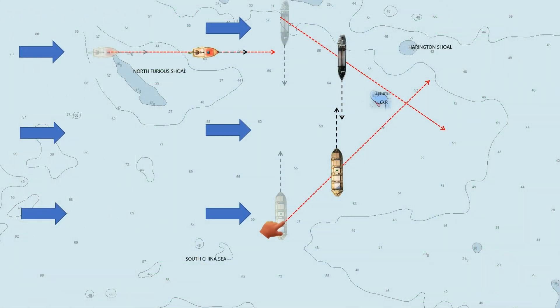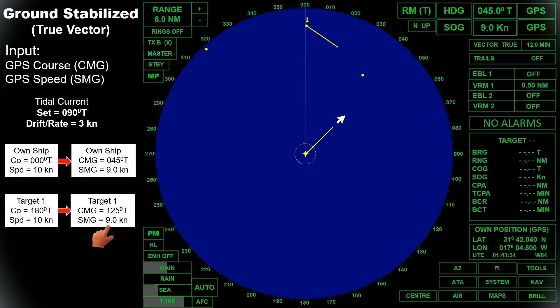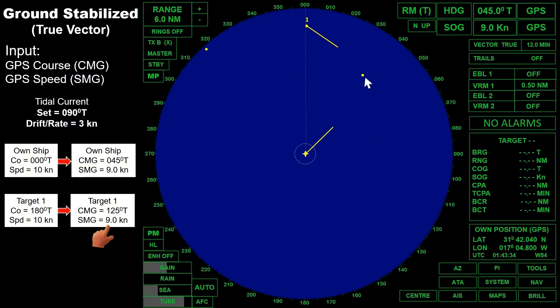Going back to the chart, the course made good of our ship shows that we are going closer into the buoy, which is in a shallow water area. In the radar display, the buoy is shown, and if we look at our own ship's vector, it shows that we are going towards the buoy. So ground stabilization in true vectors is useful when we are navigating in coastal water, as this setting will assist us if we are going towards a dangerous area.